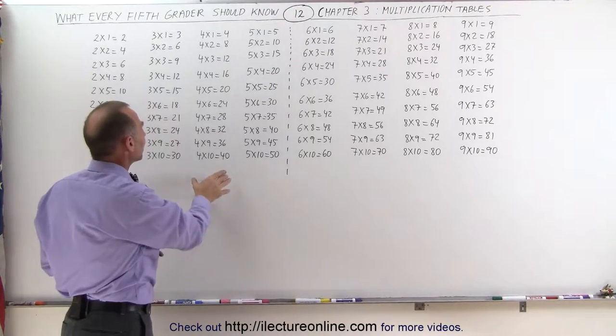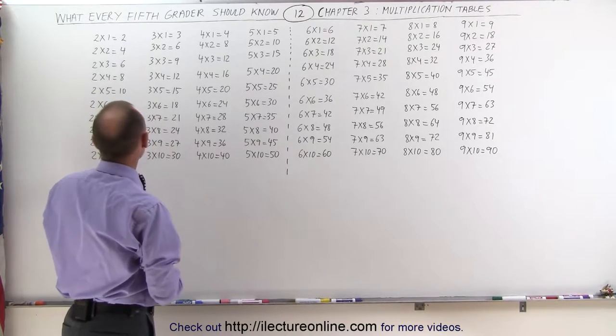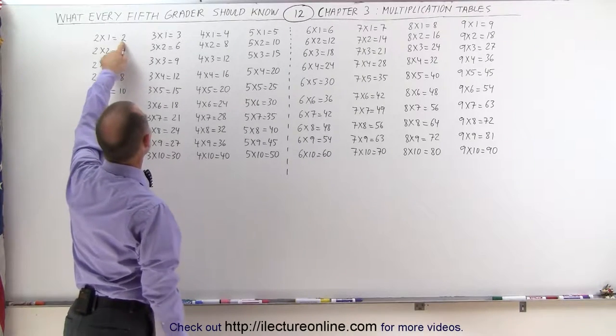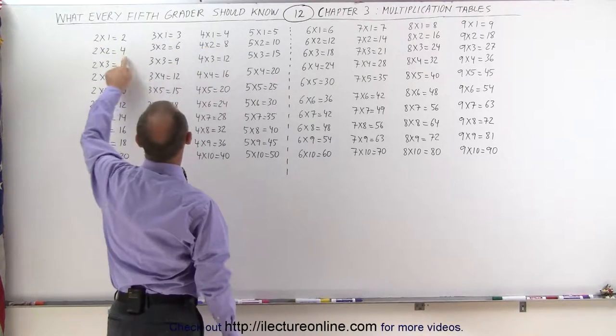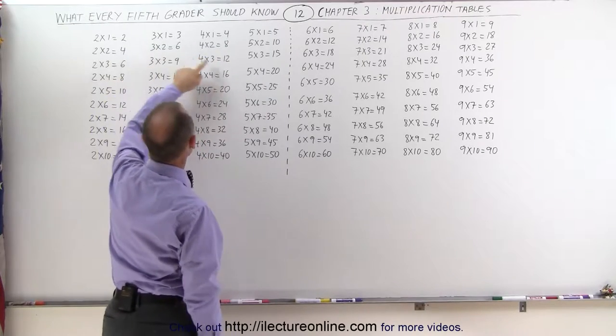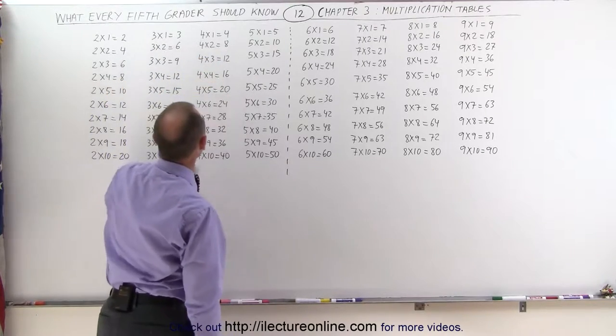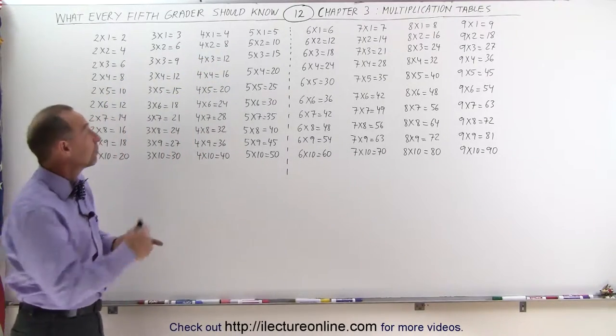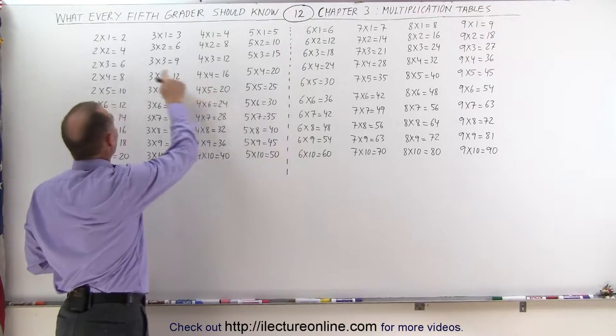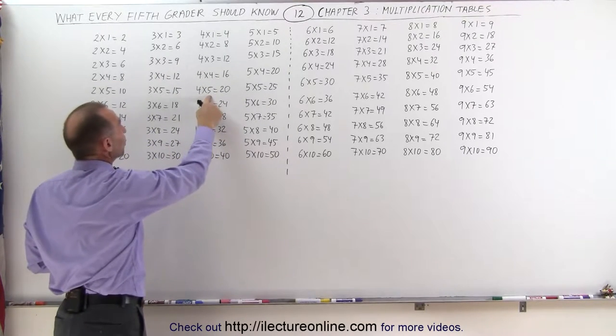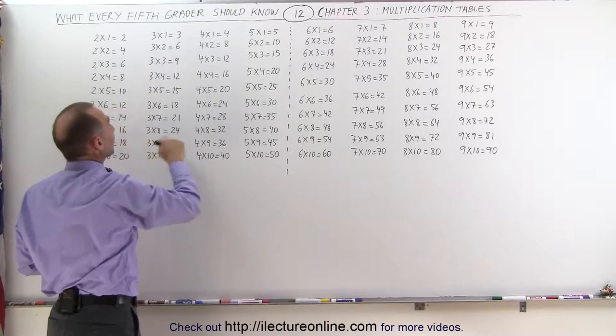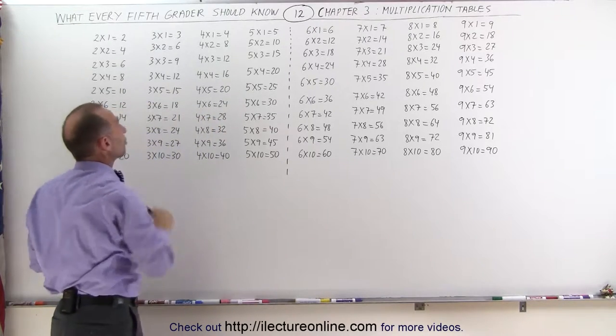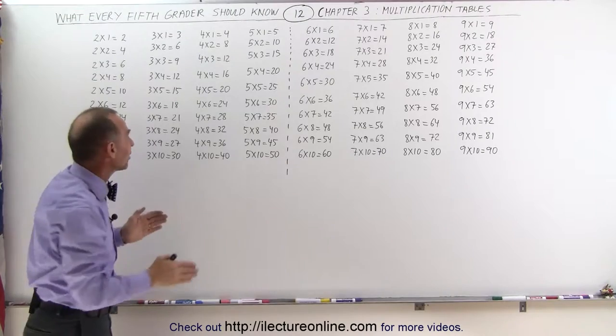And then when we multiply times 4, notice it's simply double when we multiply times 2. The answer here is 2, the answer here is 4. 4, the answer is 8. 6, the answer is 12. 8, the answer is 16. In other words, 4 times 4 is twice as much as 2 times 4, and 4 times 5 is twice as much as 2 times 5, and 4 times 6 is twice as much as 2 times 6, and so forth.